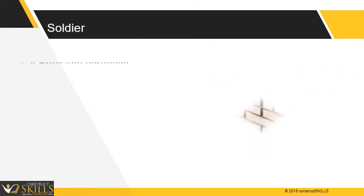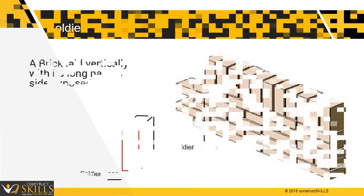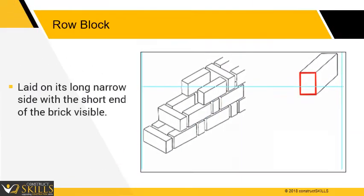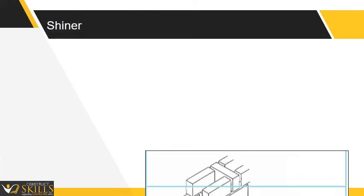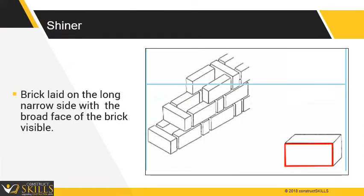Soldier: a brick laid vertically with its long narrow side exposed. Roe block: a brick laid on its long narrow side with the short end of the brick visible. Shiner: a brick laid on the long narrow side with the broad face of the brick visible.